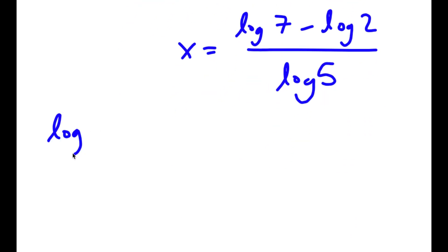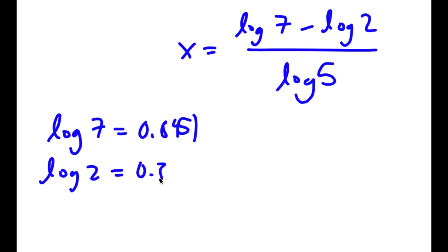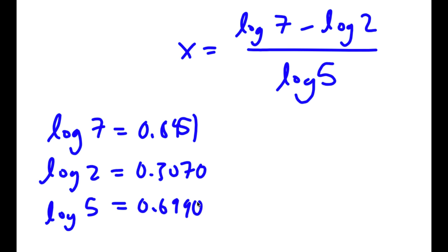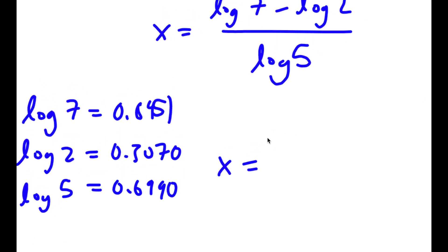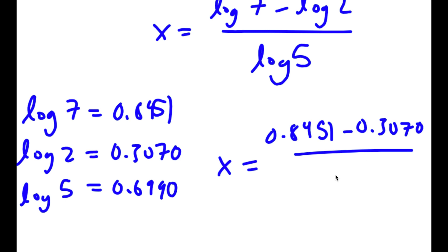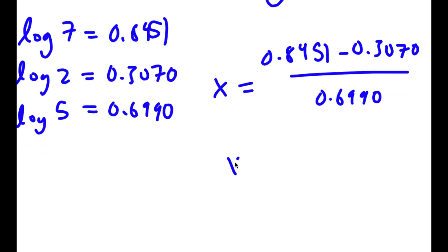Log 7 equals 0.8451, log 2 equals 0.3070, and log 5 equals 0.6990. So x equals (0.8451 minus 0.3070) over 0.6990, which equals 0.7784.